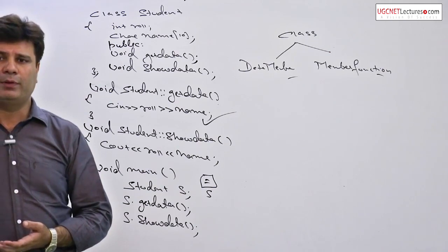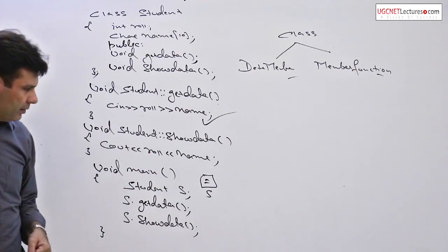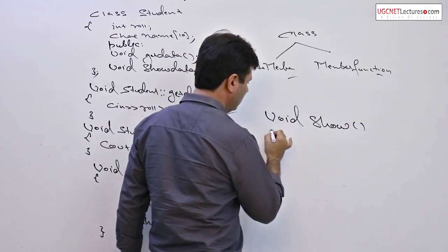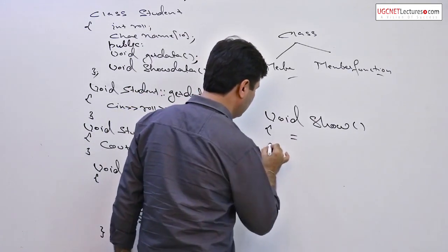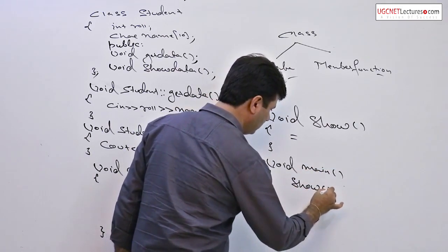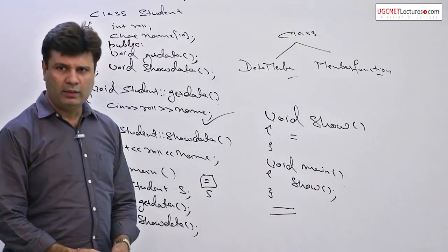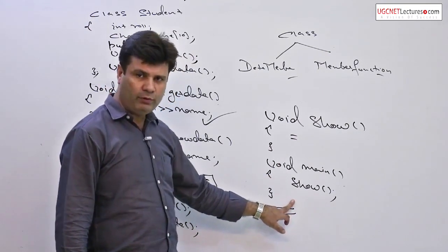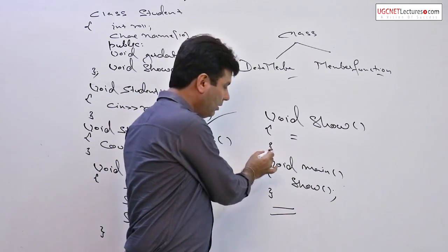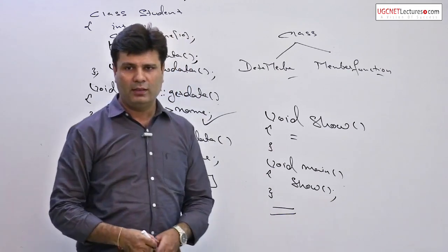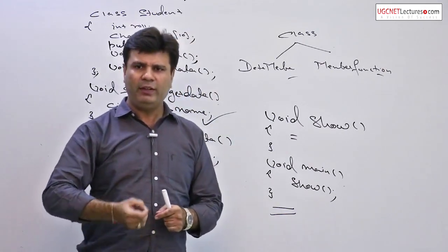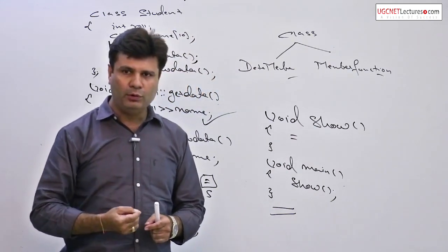Let us discuss the difference between defining a member function within a class versus outside a class. Whenever we call any function, the moment it gets invoked, it is a calling statement for the defined function. The control jumps from the calling statement to the function body, the operations perform, the function terminates, and the control returns to main. In this process — jumping to the function and coming back — it takes time. Although the time is very minute and negligible, it does take time, which we want to reduce.